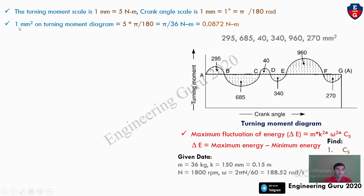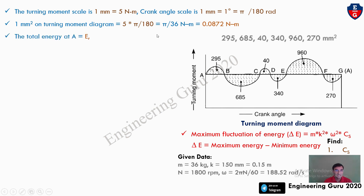So 5 × π/180 = π/36 = 0.0872 N·m per mm². This is an important step — many students make a mistake here. Now, assume that at the starting point A, the total energy is E.